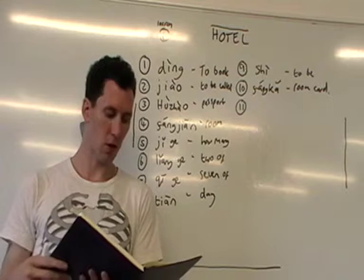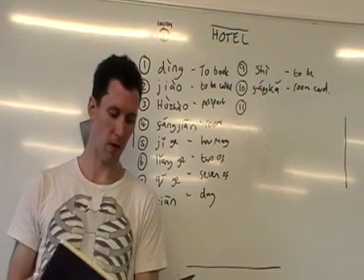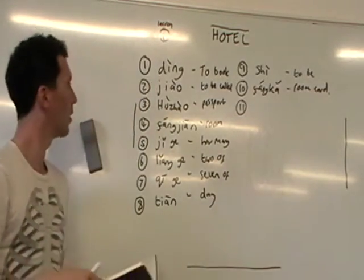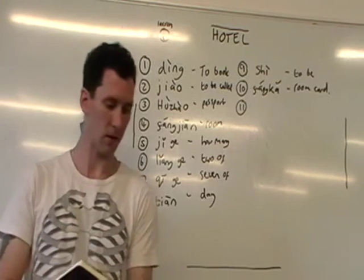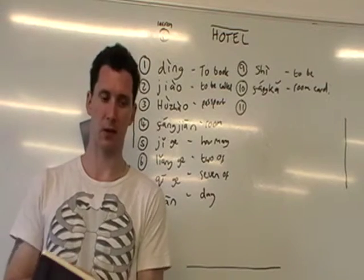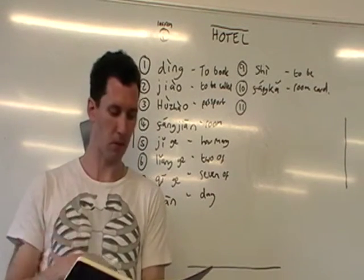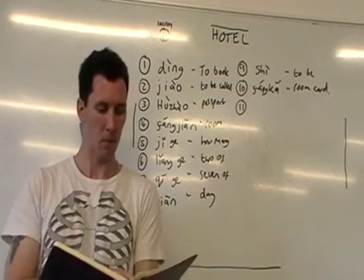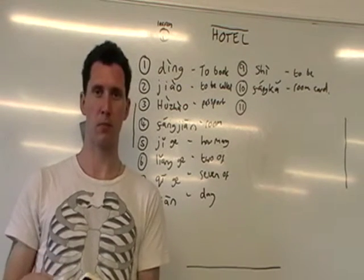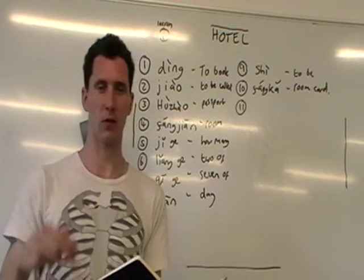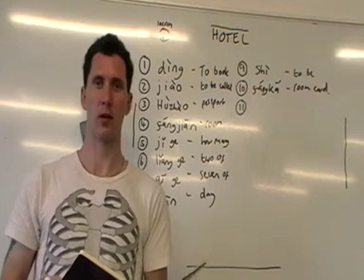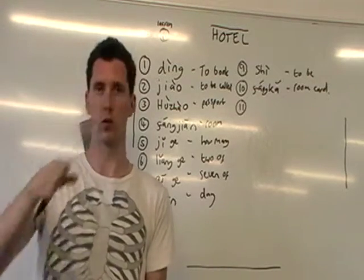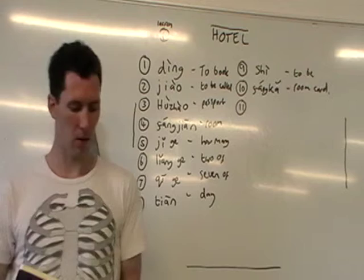Next phrase: 'Do you guys have passports?' So the receptionist is asking you if you have your passport. Nǐmen — you guys, covered in the last lesson — nǐmen yǒu hùzhào, and then the question particle ma at the end. In Chinese, instead of a question mark, you add ma. So nǐmen yǒu hùzhào ma — do you guys have passports?